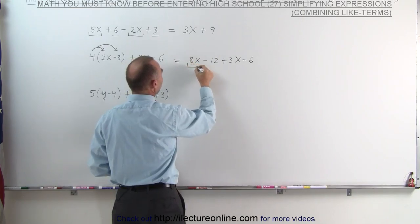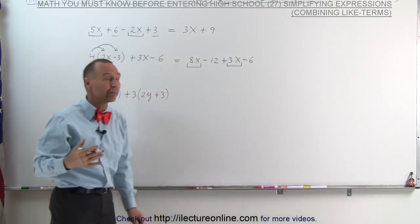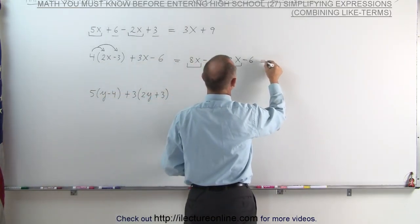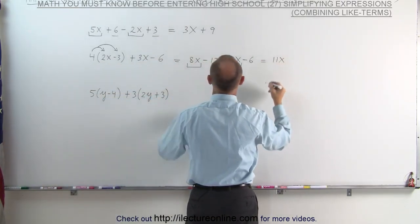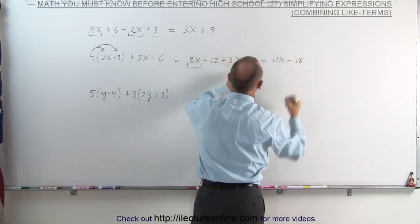Notice that the term 8x and the term 3x are like terms. They have the same letter part, therefore they can be combined. 8 plus 3 is 11, this becomes 11x, and minus 12 minus 6 is minus 18.